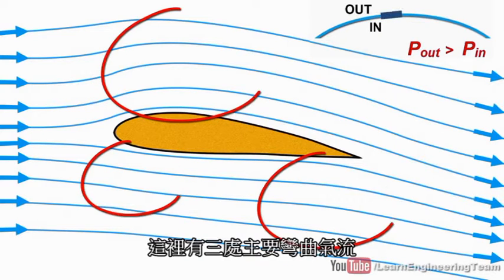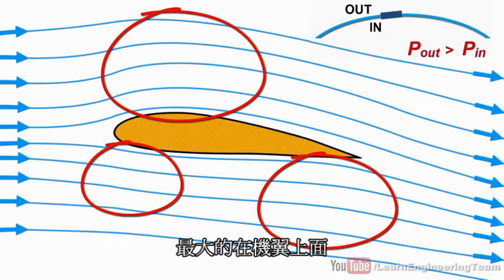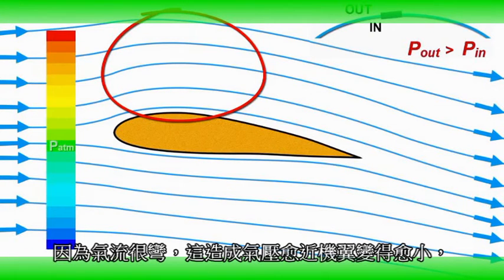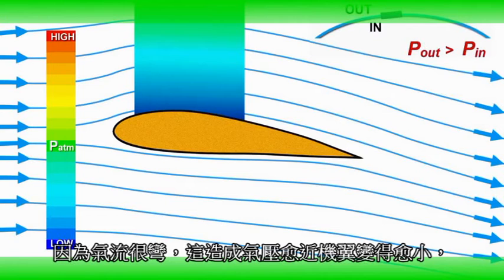There are three main flow curvatures in this flow. The biggest is at the top of the airfoil. Far away from the airfoil, the pressure is atmospheric. So, due to this high curvature, pressure will decrease as we move toward the airfoil.